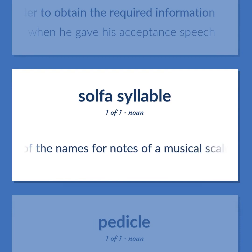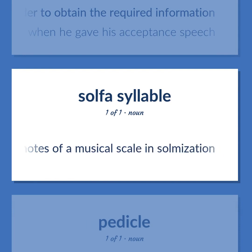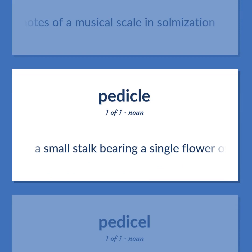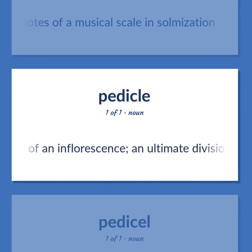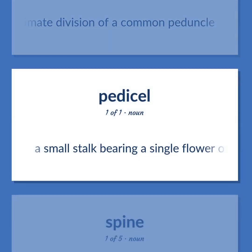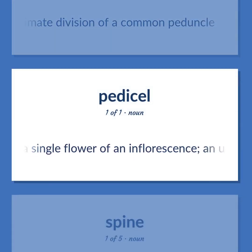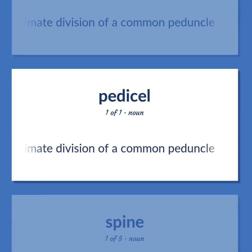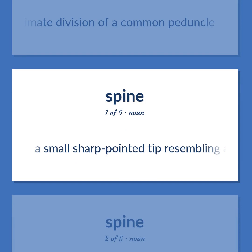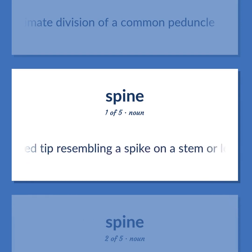One of the names for notes of a musical scale in solmization. A pedicel: a small stalk bearing a single flower of an inflorescence; an ultimate division of a common peduncle. A small sharp pointed tip resembling a spike on a stem or leaf.